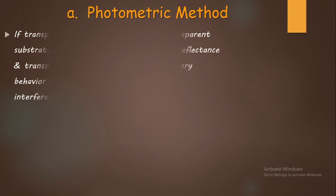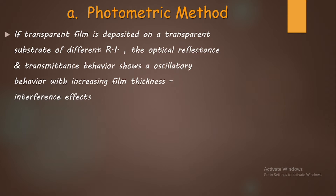Let's study the photometric method first. If a transparent film or slightly absorbing film is deposited on a transparent substrate, both are transparent but differ in refractive index. When the film and substrate have different refractive indices, the optical reflectance and transmittance of the film-substrate combination shows an oscillatory behavior with increasing film thickness due to interference effects.